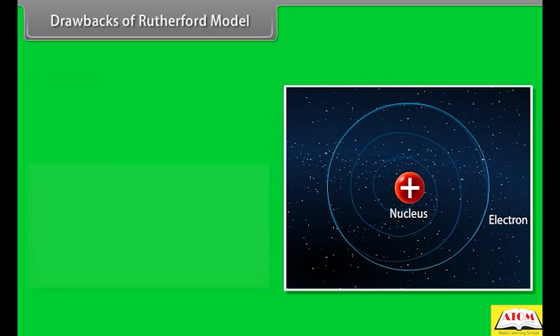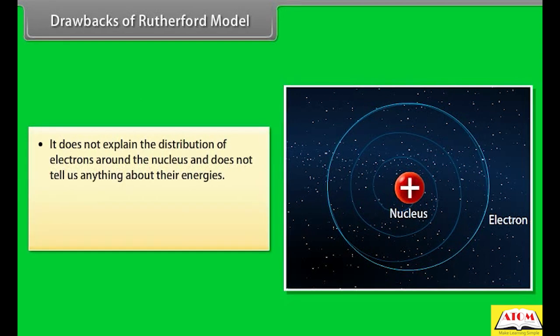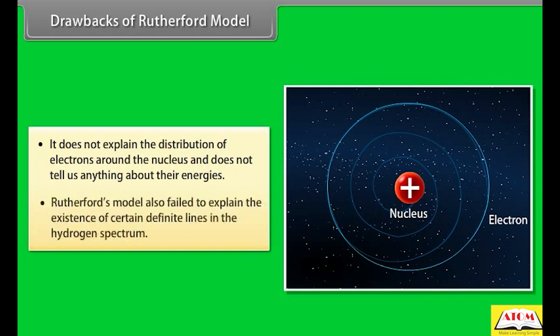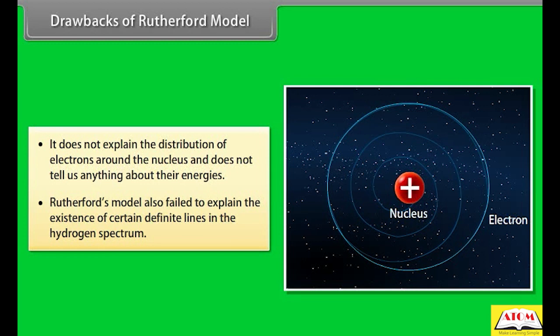2. It does not explain the distribution of electrons around the nucleus and does not tell us anything about their energies. 3. Rutherford's model also failed to explain the existence of certain definite lines in the hydrogen spectrum.